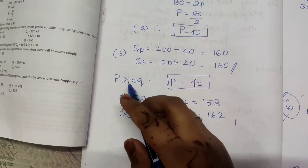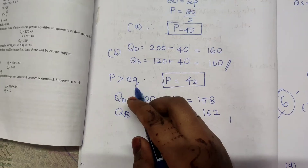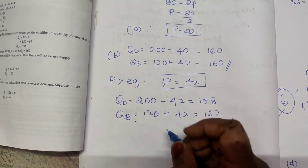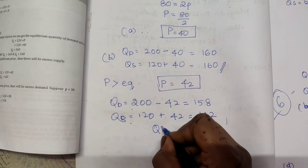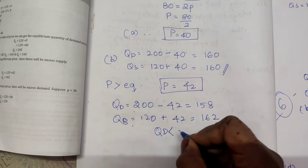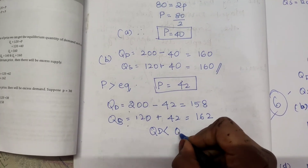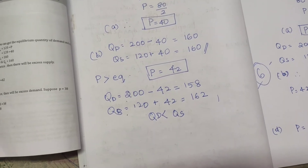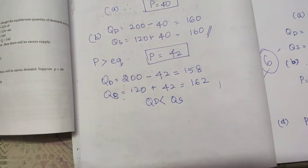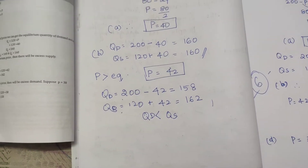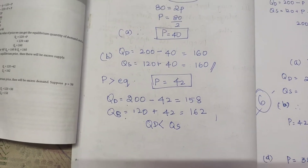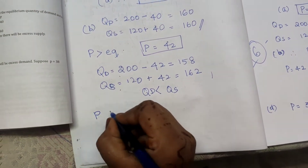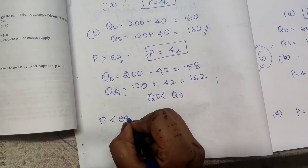From this we can understand that when the price is greater than equilibrium price, supply will be more and demand will be less — quantity demanded will be less than quantity supplied. Similarly, when demand is greater, price will be less.